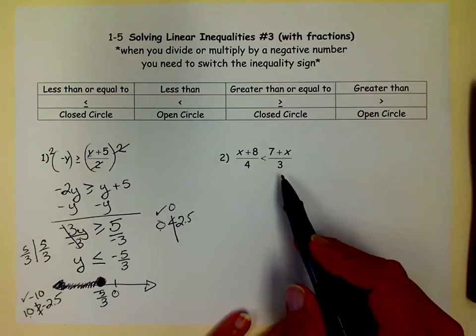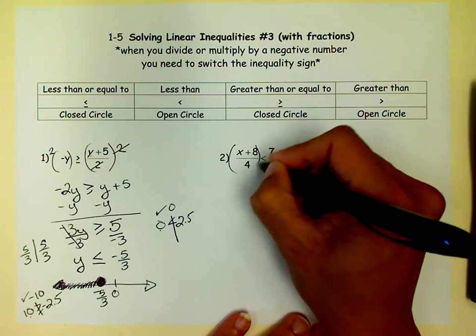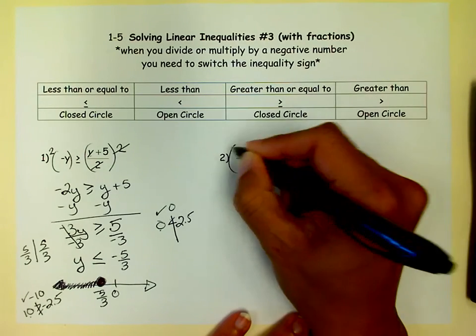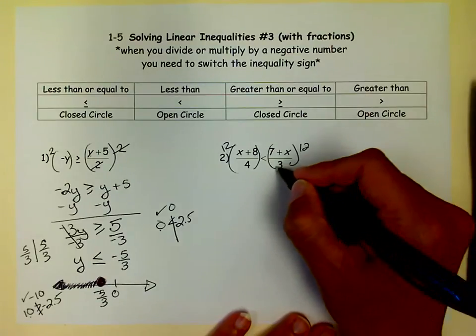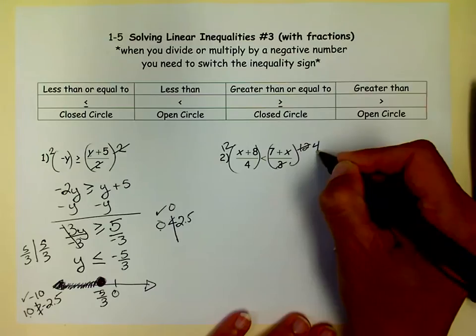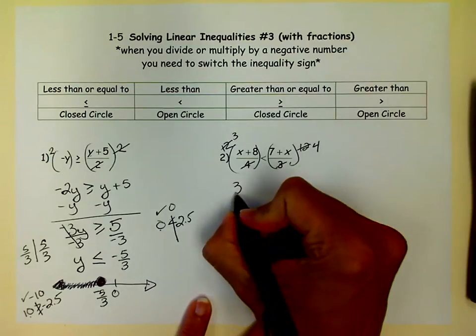Now this one has two denominators. Remember, we have to get the common denominator. So our common denominator is 12. Once I find the common denominator, I multiply both sides by 12. But I cancel first. I divide first. 3 goes into 12 four times. 4 goes into 12 three times. And now I'll rewrite it.